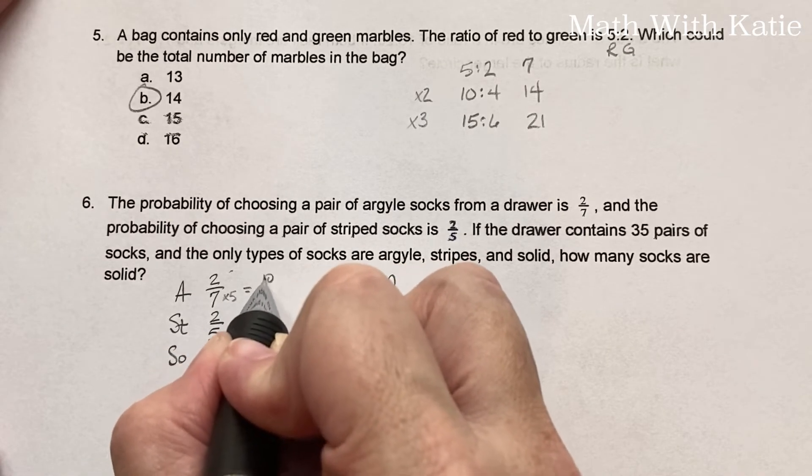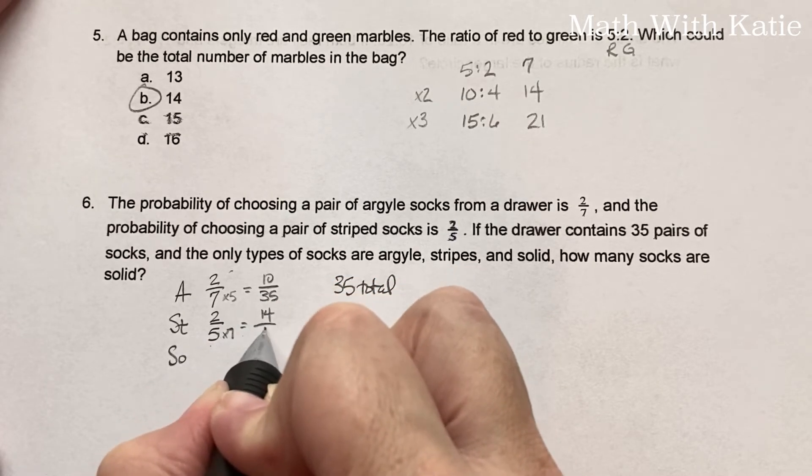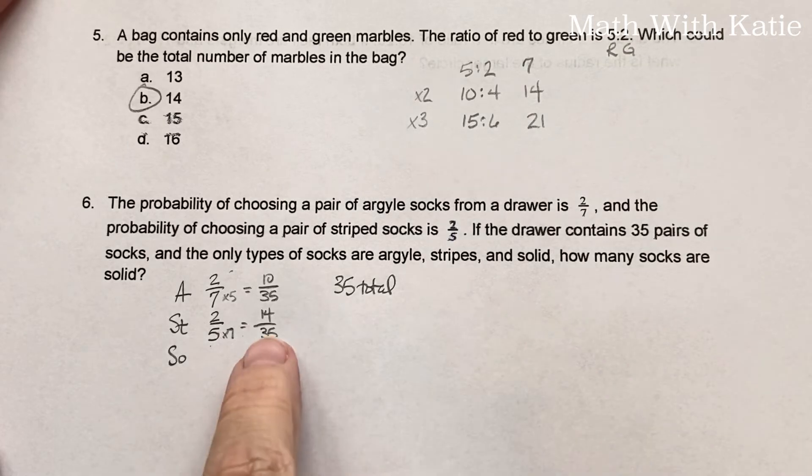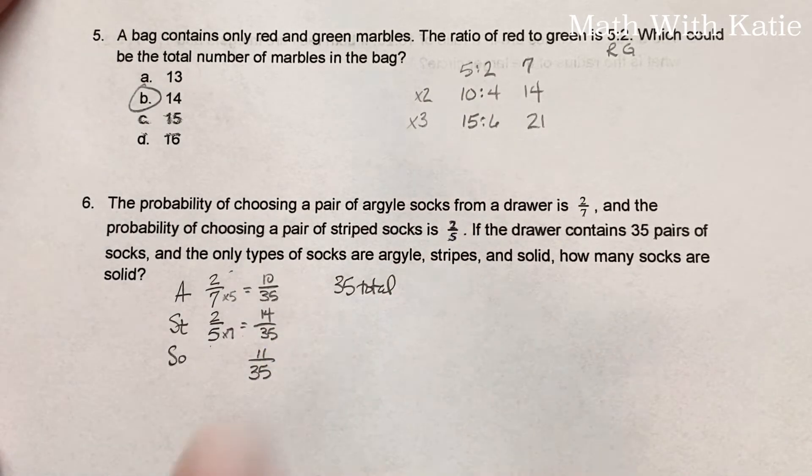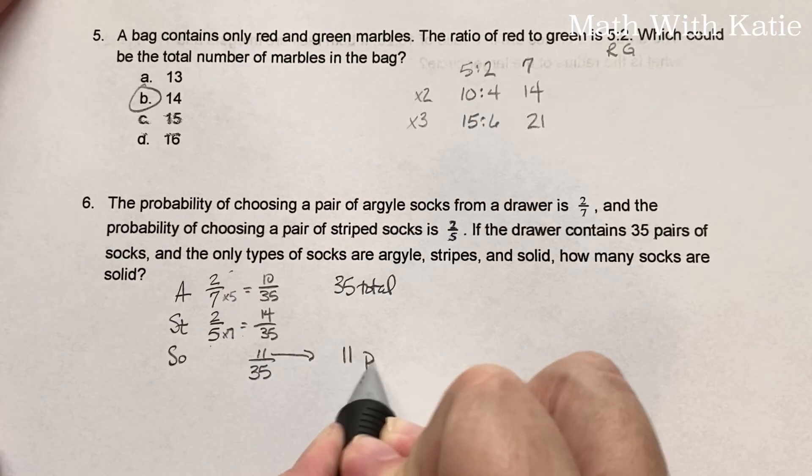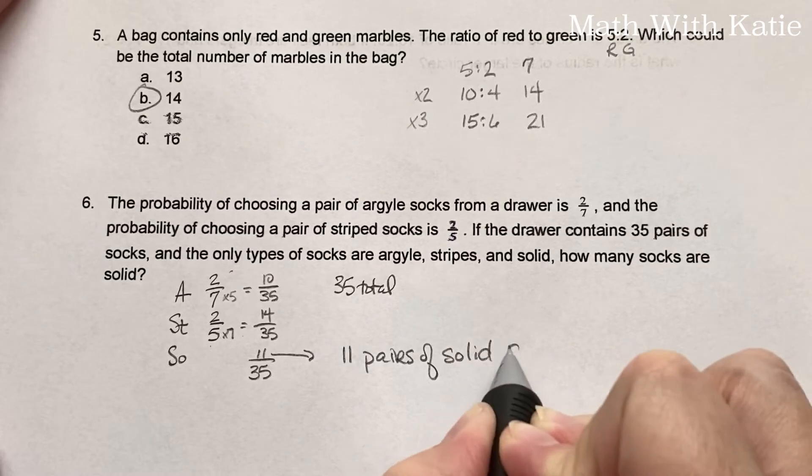So that gives us 10/35 and 14/35. So now how much do we have left over for solids? 10 plus 14 is 24. So 35 minus 24 is 11. So 11/35. And since the denominator and our total number of socks are the same, we actually know 11 pairs of solid socks.